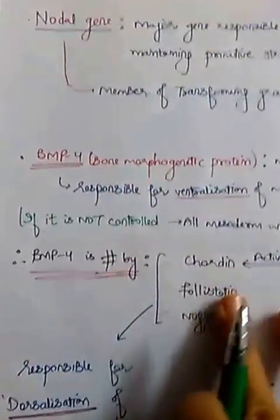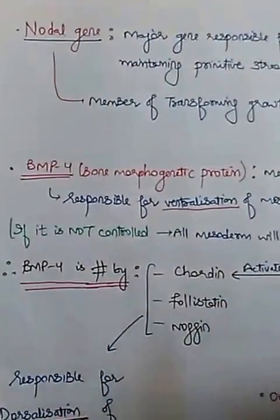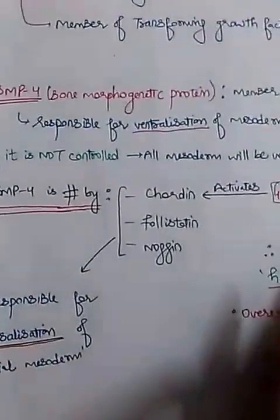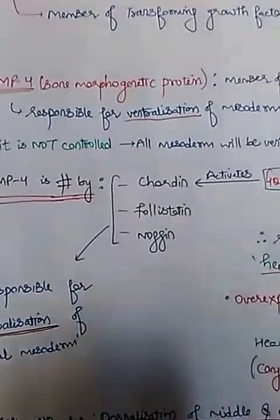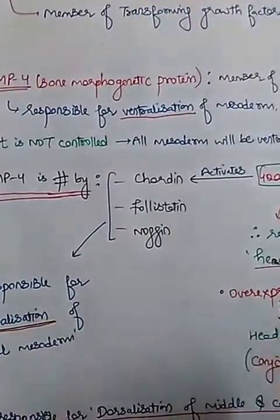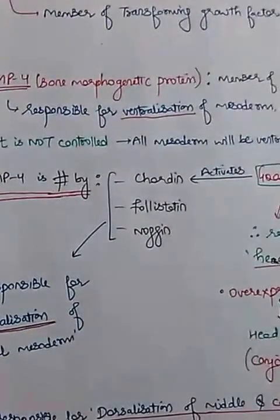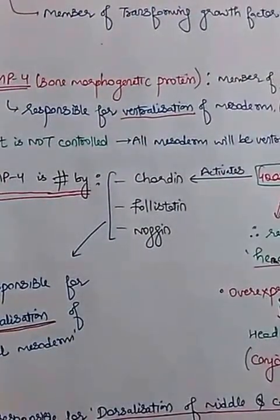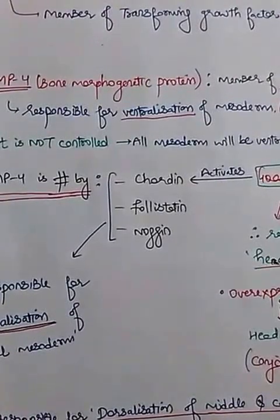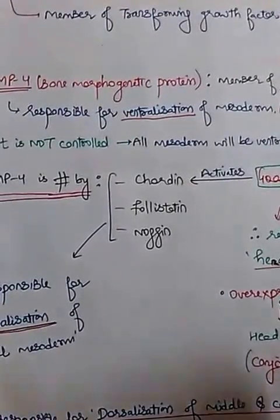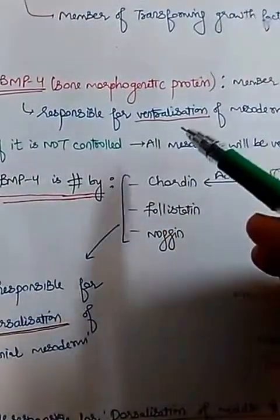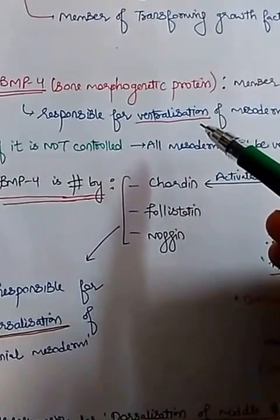About the nodal gene, I have talked. Now one more gene of the same family — the transforming growth factor beta family — is BMP4 gene, which is mainly responsible for ventralization of mesoderm.